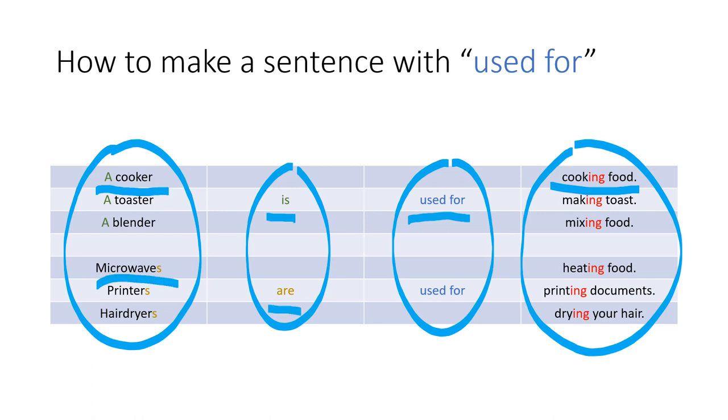Remember, if you have a cooker and the word is, you know that we are talking about a sentence with singular. And if you see an S at the end of the machine and the word are, you know that we are talking about a sentence with plural. Okay, good. Let's continue.